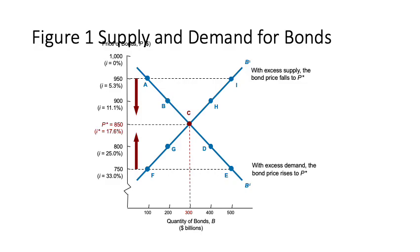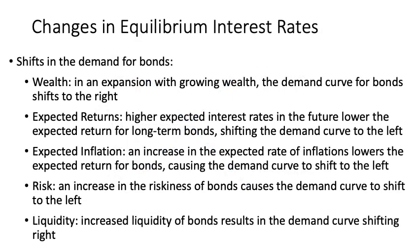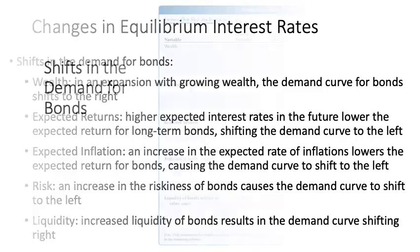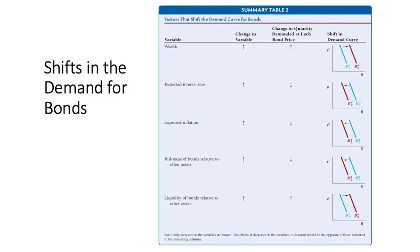There are five factors that could affect the demand for bonds. Wealth has a positive relationship as explained before. Expected return has a negative relationship. Expected inflation has a negative relationship. Risk again has a negative relationship. And liquidity has a positive relationship. As shown in the slide, the impact of wealth and liquidity are positive, so the demand curve shifts to the right.